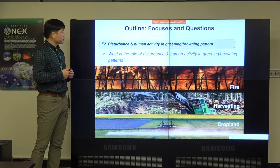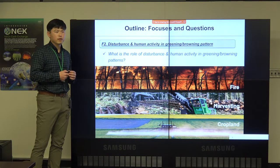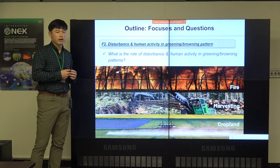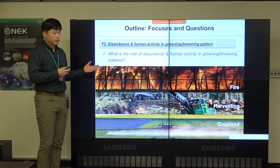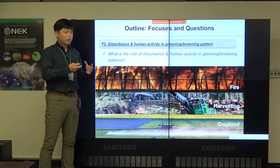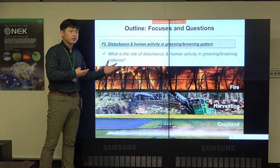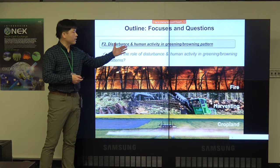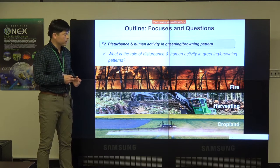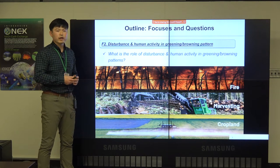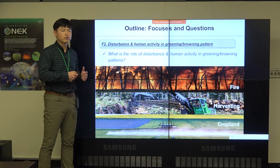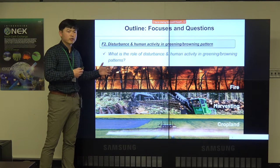Moving to the second focus, I'll talk about disturbance and human activity and their role in vegetation change in northern lands. Most large-scale studies mostly ignore this because climate data cannot capture the landscape history like disturbance and human activity. In this study, I brought in landscape-scale disturbance history data and also used large-scale 500-meter MODIS data to look at how vegetation interacts with different landscape histories.